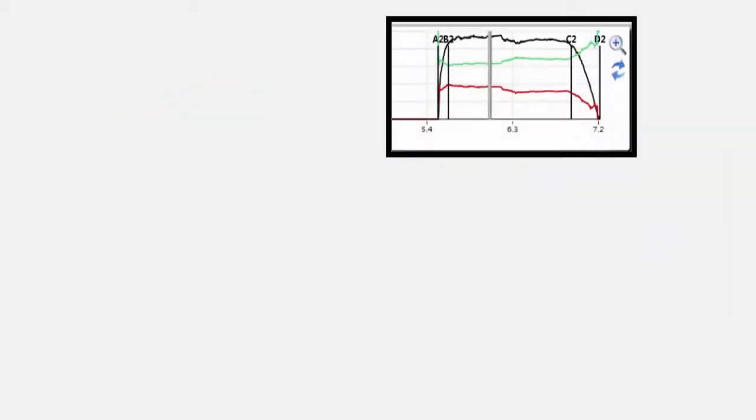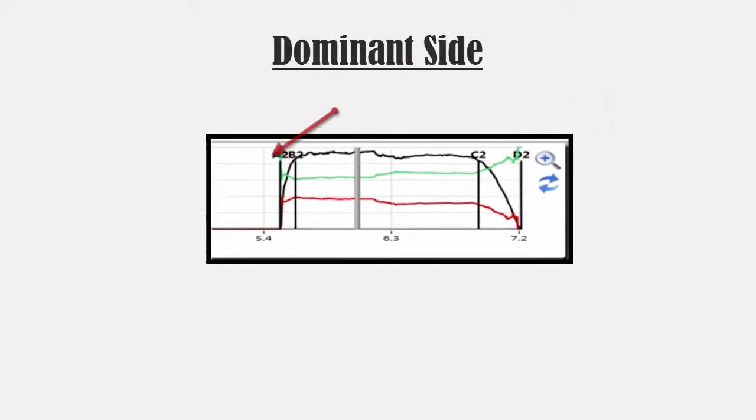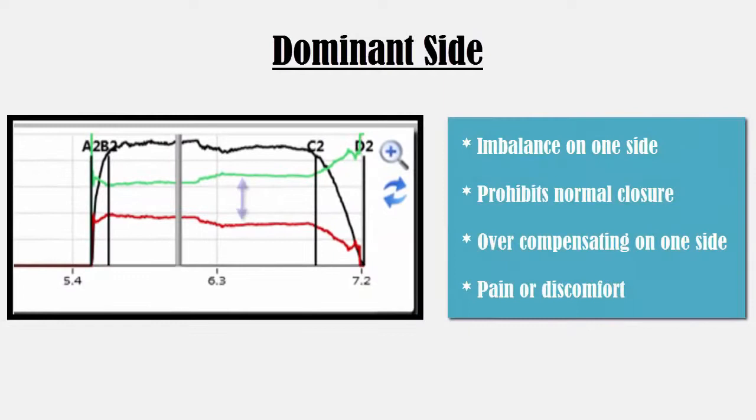The second example displays the green line starting at 100%. This shows that the left side contacts first and remains more forceful throughout the closure. This force pattern may demonstrate muscular weakness because the red force line is slowly decreasing throughout maximum intercuspation. Pain and discomfort may be associated with the weaker side, leaving the patient to compensate to the other side.